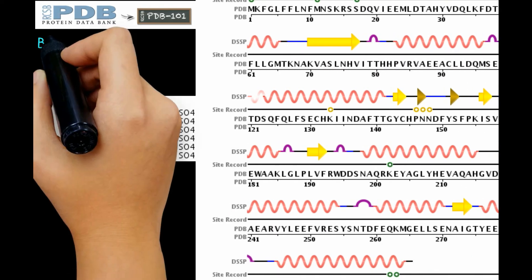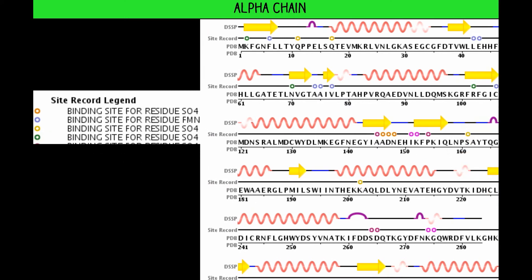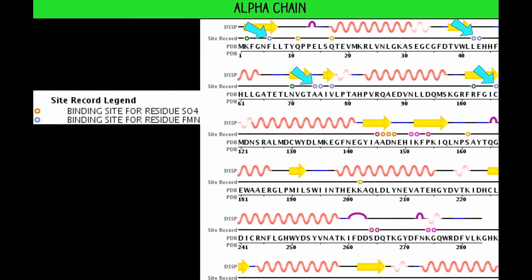It also annotates the specific interaction sites between the enzyme and its ligands. The alpha chain is the only one with interaction sites with the FMN substrate, since it is the active chain.